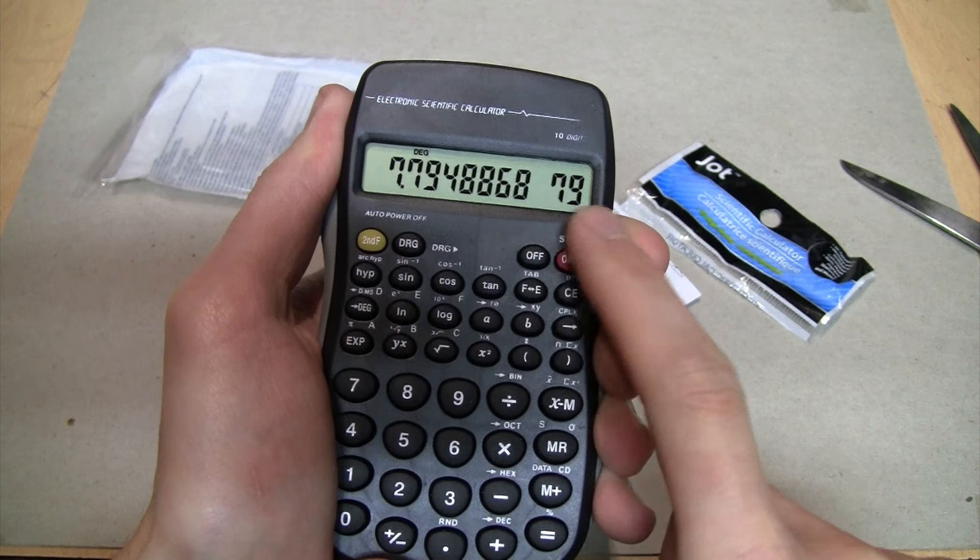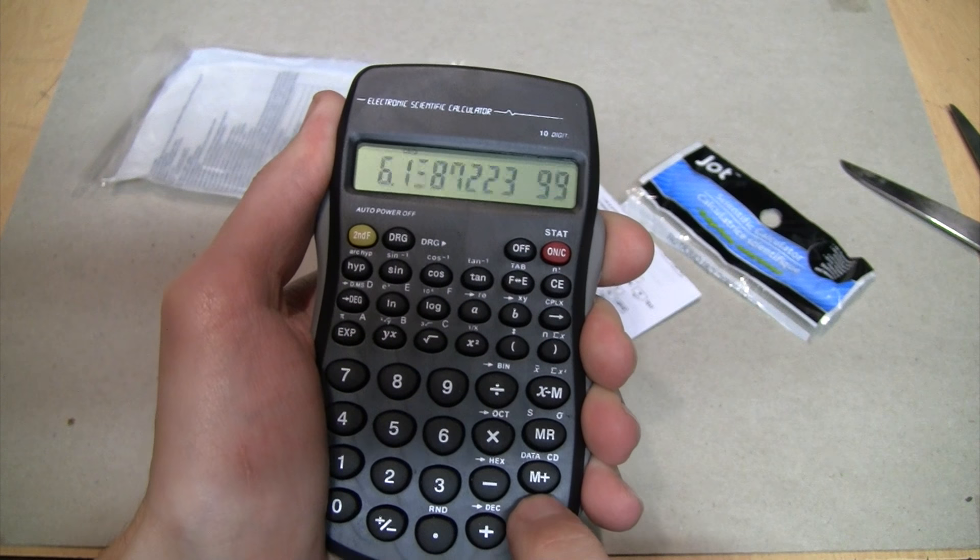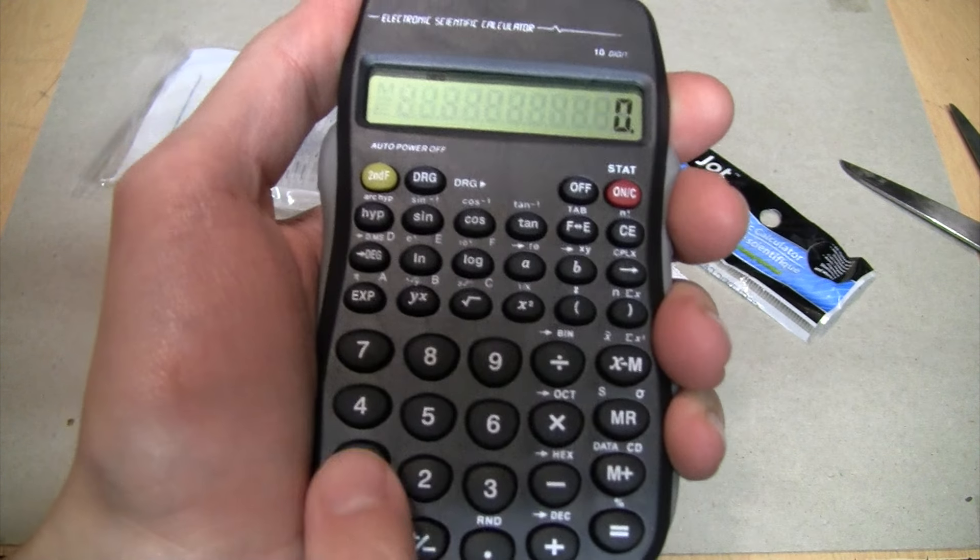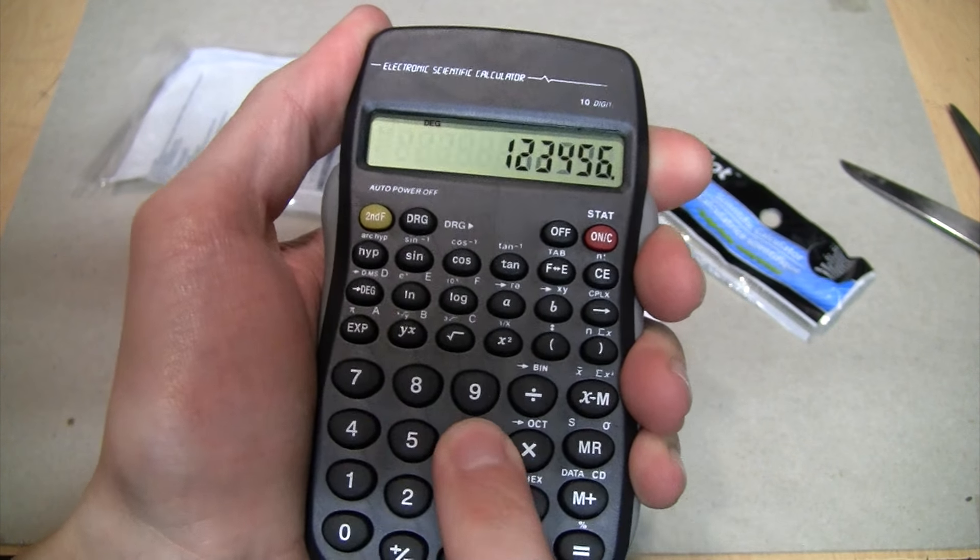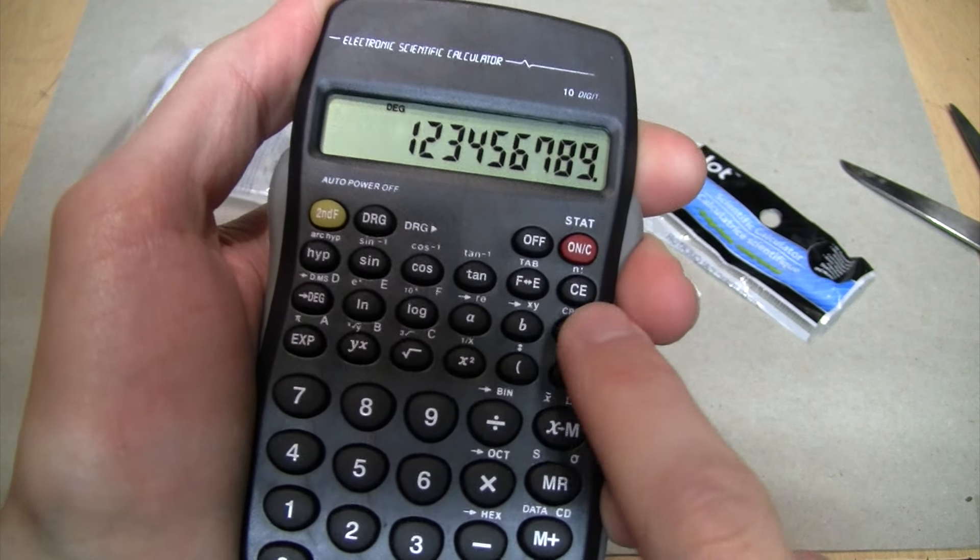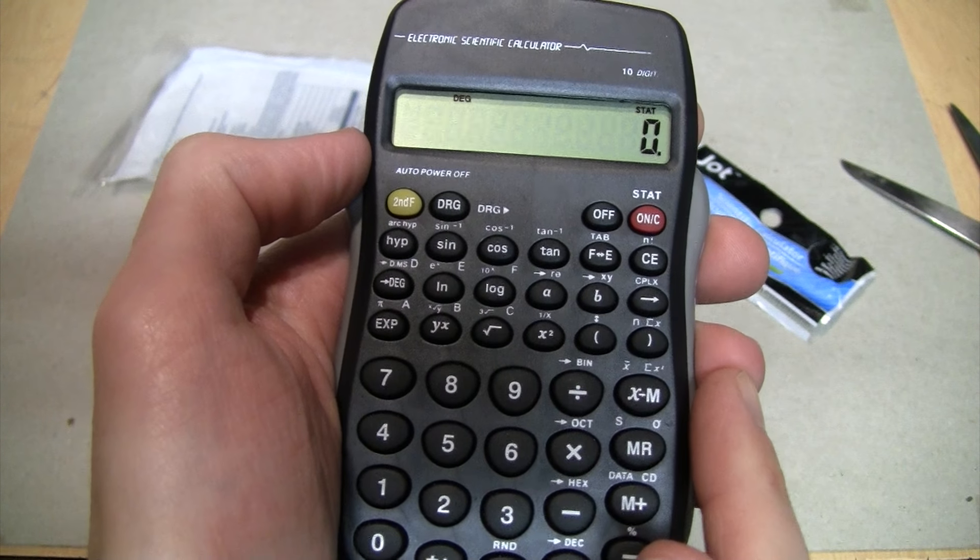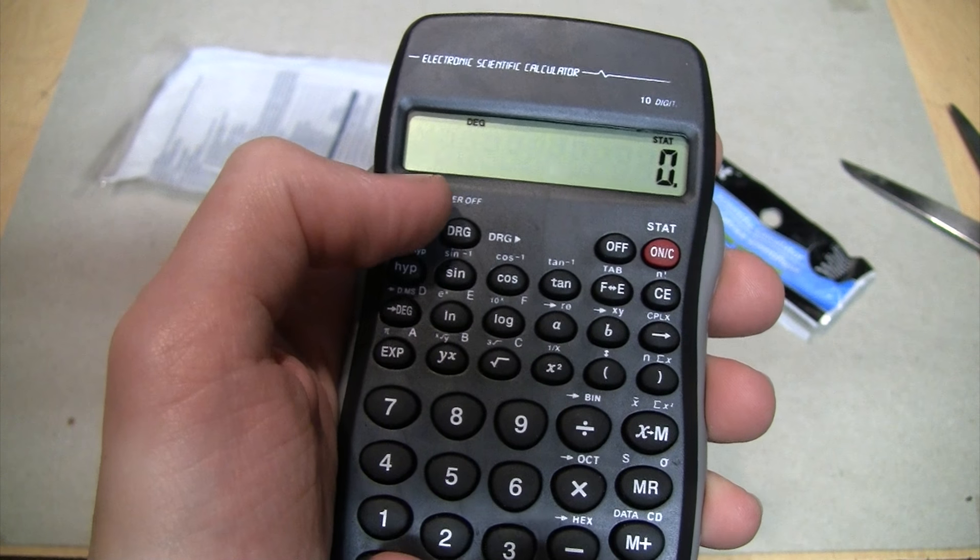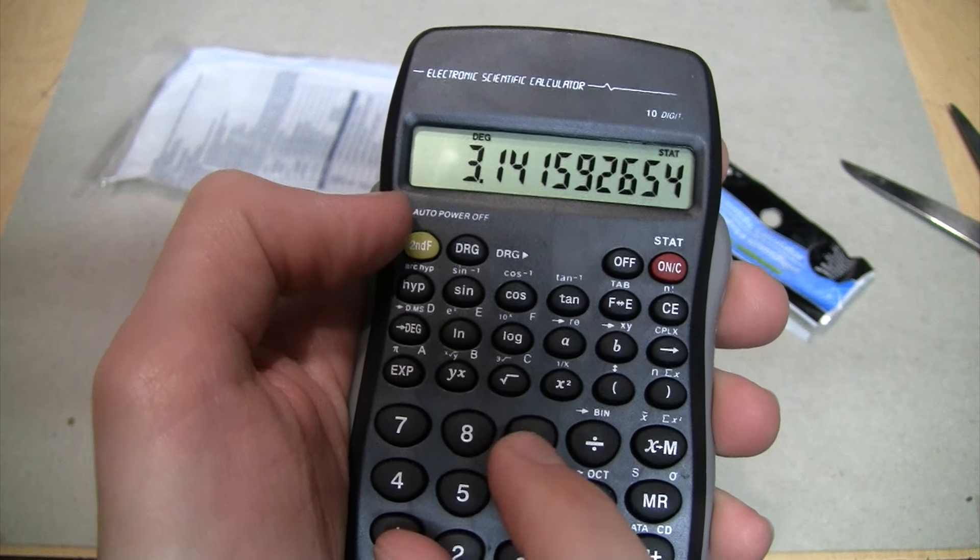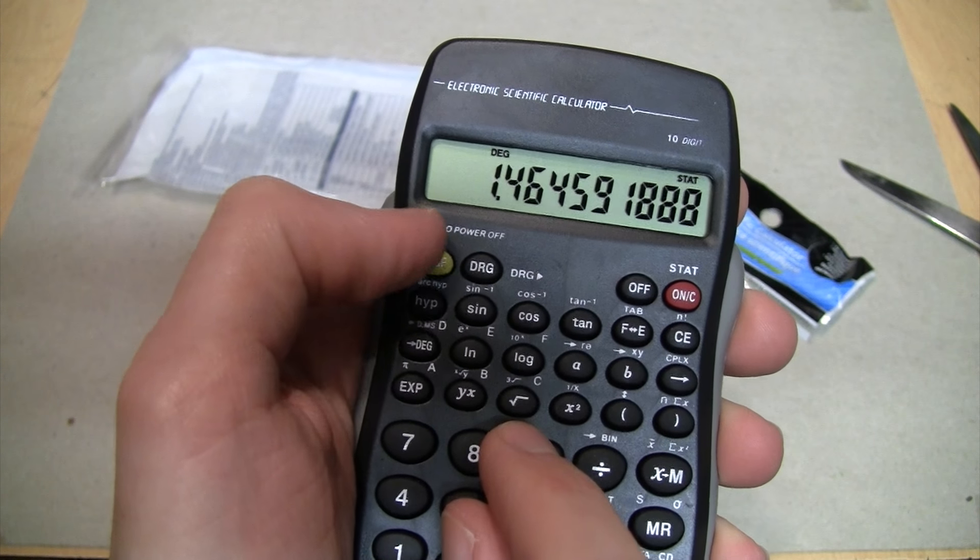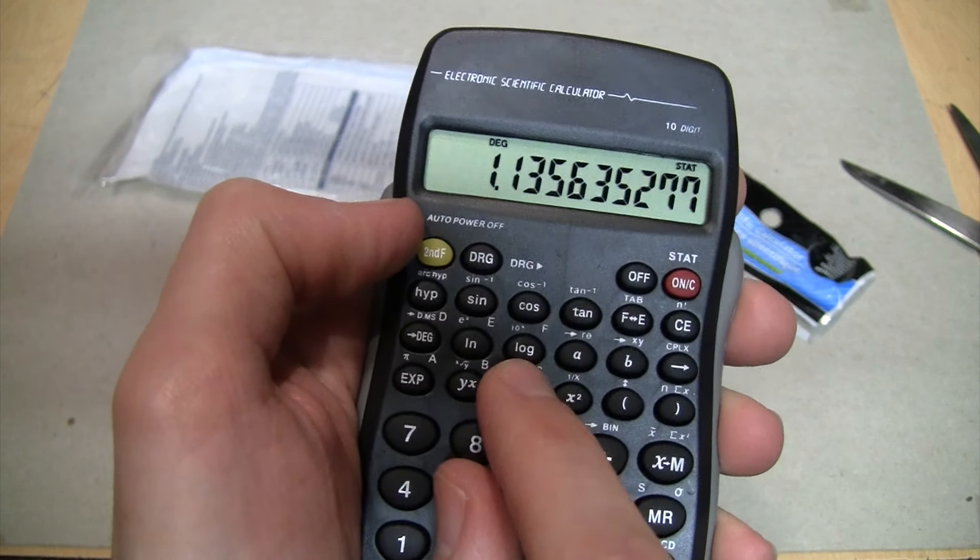And if you try to do an overflow, for example by doing all eights times two, it goes into scientific notation except it doesn't put an E there, and it can keep going all the way up to E99. But above that you finally get an overflow error. And it does have a backspace, which is nice, this little button here.